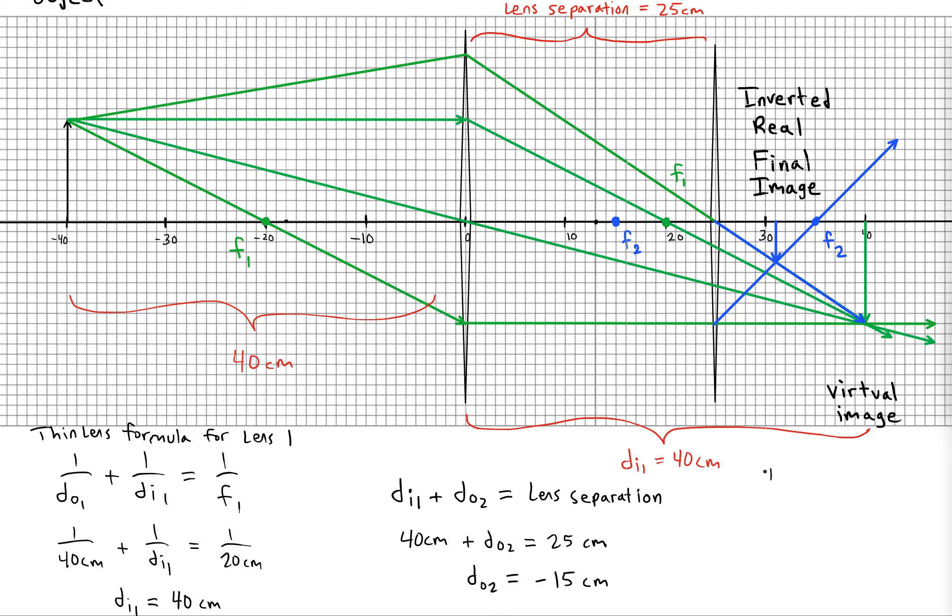So then when we go to do the thin lens formula for lens 2, we've got to plug in that negative object distance. We'll get 1 over negative 15.